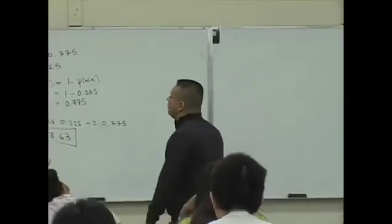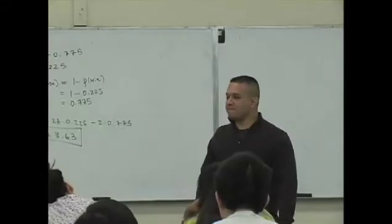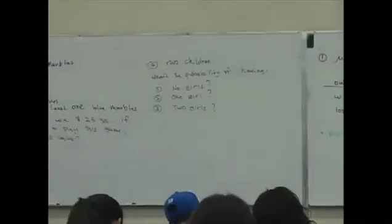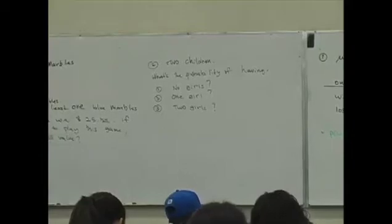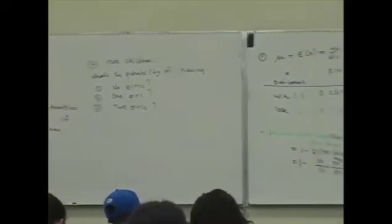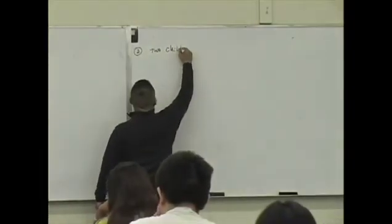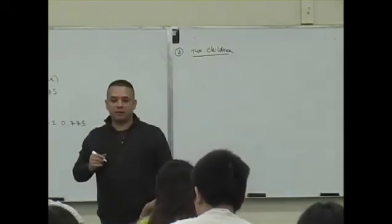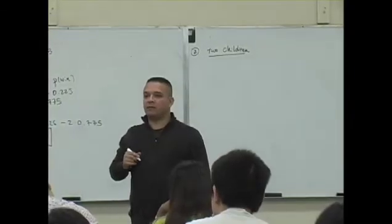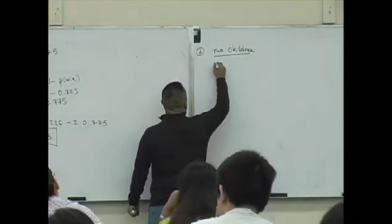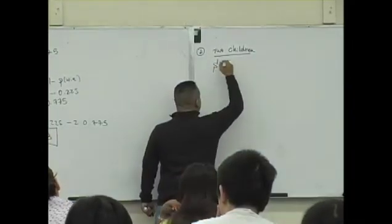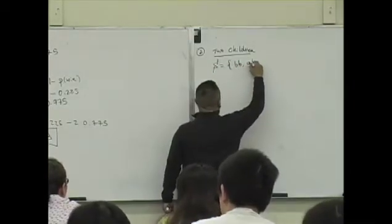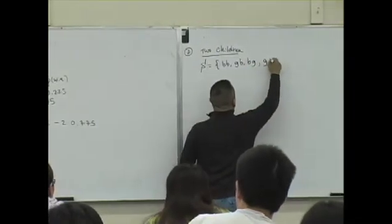You guys okay with this? Okay, good. Look at the second question. Was the second question hard? How hard was the second question? How do you determine the probability of having no girls, one girl, or two girls? What's one way you could do this? What's the list of outcomes? What's your list of all possible outcomes? Boy, boy. Boy, girl. Girl, boy. And girl, girl.